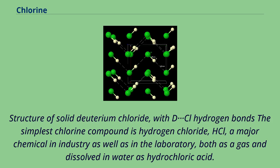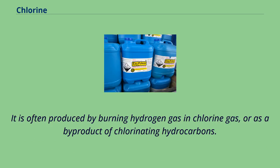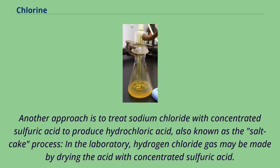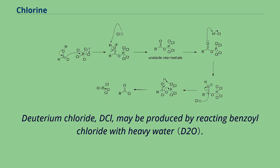The simplest chlorine compound is hydrogen chloride, HCl, a major chemical in industry as well as in a laboratory, both as a gas and dissolved in water as hydrochloric acid. It is often produced by burning hydrogen gas in chlorine gas, or as a byproduct of chlorinating hydrocarbons. Another approach is to treat sodium chloride with concentrated sulfuric acid to produce hydrochloric acid, also known as the salt cake process. In the laboratory, hydrogen chloride gas may be made by drying the acid with concentrated sulfuric acid. Deuterium chloride, DCl, may be produced by reacting benzoyl chloride with heavy water.